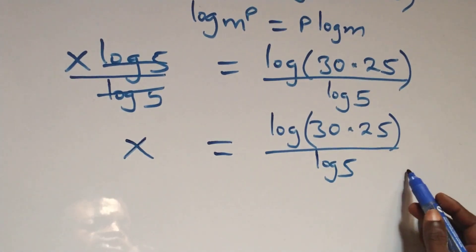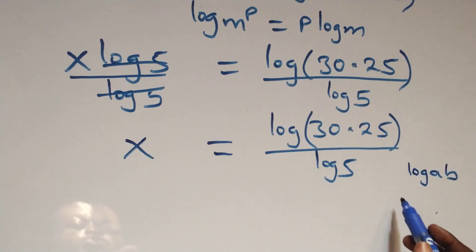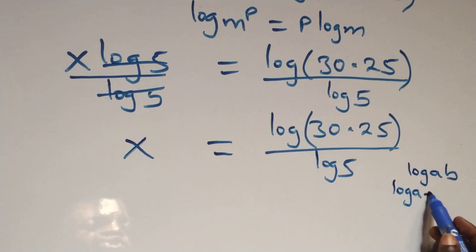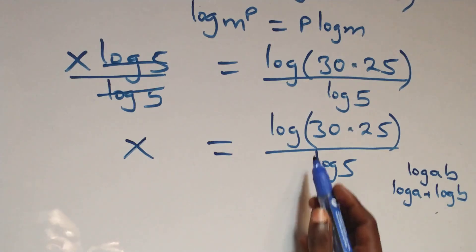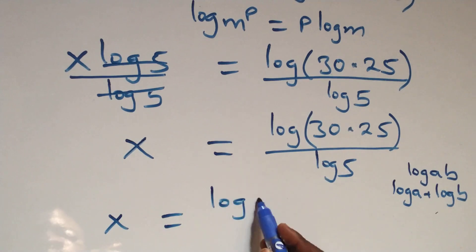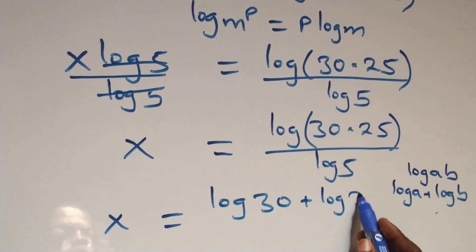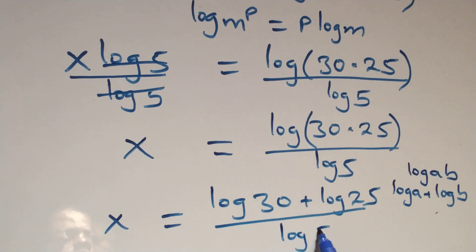What we have follows the law of logarithms: log a times b is the same thing as log a plus log b. This gives us x equals to log 30 plus log 25 over log 5.